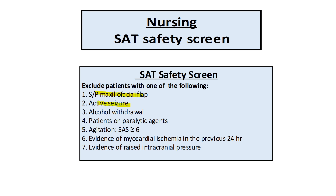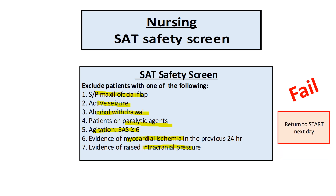Exclusions include: maxillofacial flap, active seizure, alcohol withdrawal, receiving a paralytic agent, agitated with SAS more than 6, myocardial ischemia, or high ICP. If they have any of these elements, then the safety screen fails and I need to re-scan the patient the next day. If the patient has no exclusion, we consider it a passed safety screen.